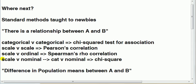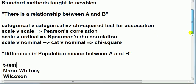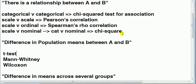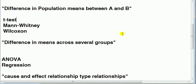Next common type of statement is people want to assess whether there's a difference in population means between A and B. Here we've got the option of t-test, Mann-Whitney, Wilcoxon.